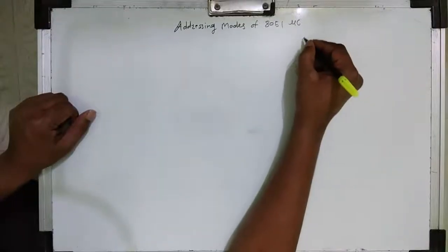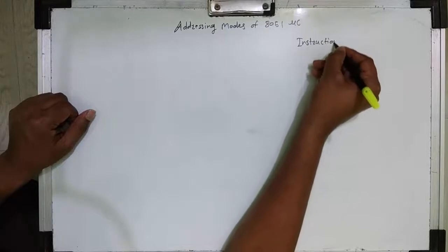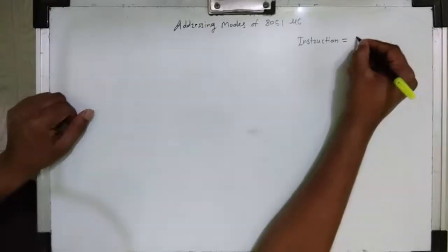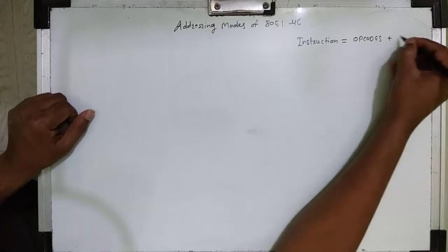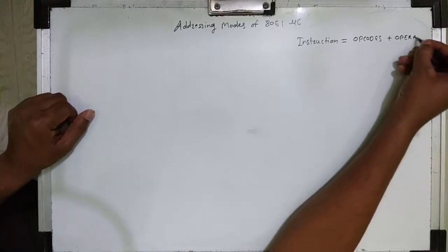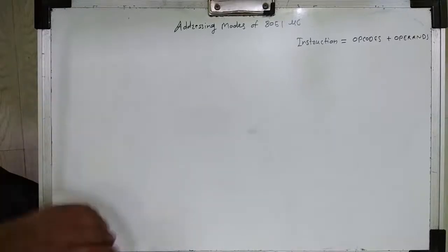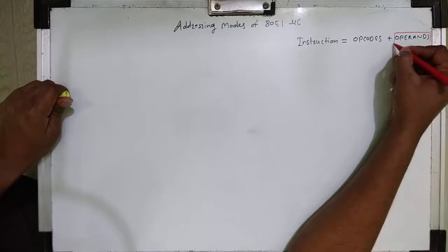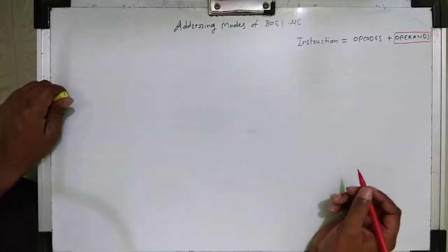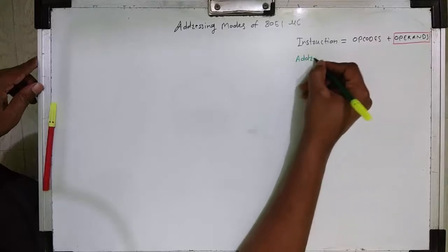In this video we are going to see addressing modes of 8051. Before directly going to addressing modes, let's understand what is meant by instruction. Instruction is the command given to a microcontroller to perform a specific task. An instruction is made up of two parts: the first part is the operational code and the second part is the operand.